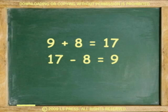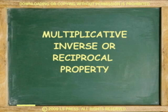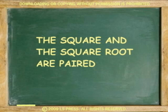In this case, addition, positive, and subtraction, negative are being paired. When division undoes multiplication, it is called the multiplicative inverse or reciprocal property. In this case, multiplication and division are being paired. In algebra, we can also pair the square and the square root.